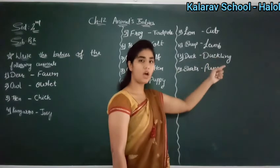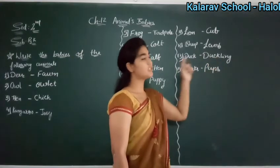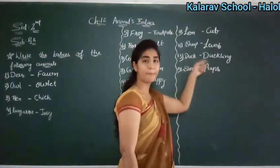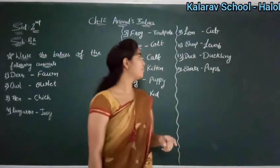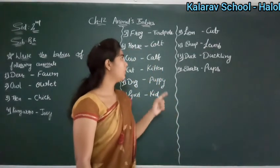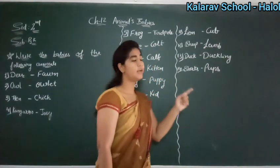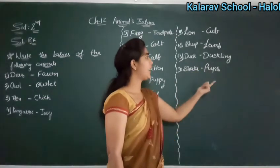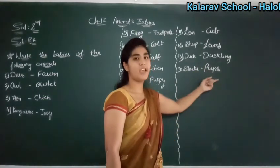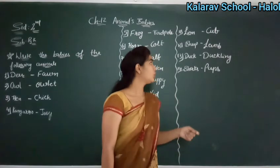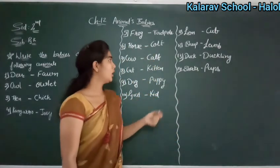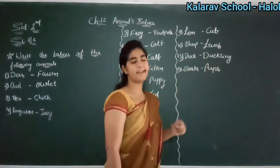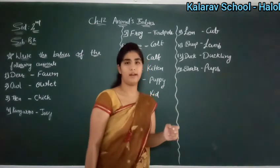Lion — cub. C-U-B. Cub. Sheep — lamb. L-A-M-B. Lamb. Duck — duckling. What is the spelling of duckling? D-U-C-K-L-I-N-G. Duckling. You know the spelling of duck? D-U-C-K. Duck. Uske baad L-I-N-G lagana hai. Duckling.